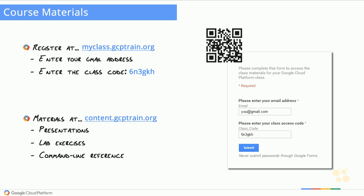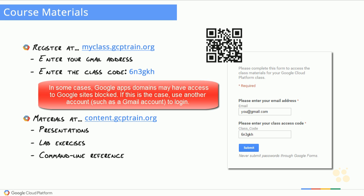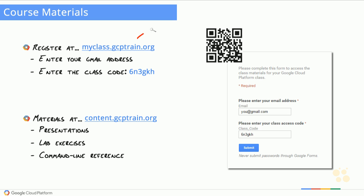Let's finish this nugget by getting you access to the course materials. You'll need a Google account — a Gmail address or Google Apps domain account will work fine. If not, head over to accounts.google.com and create one. From there, head over to myclass.gcptrain.org, where you can enter your email address, enter the class code 6N3GKH, and hit Submit.